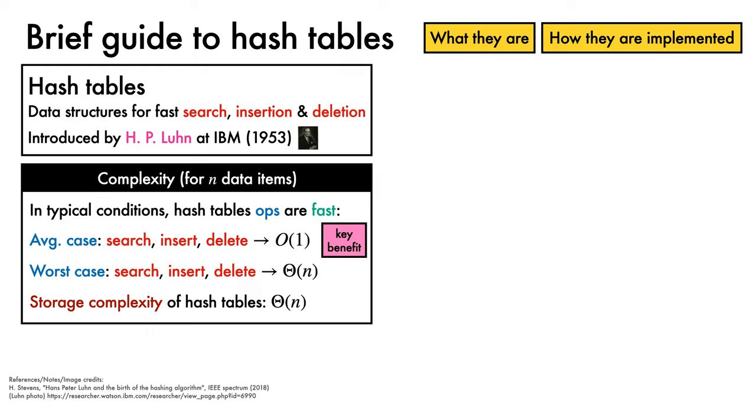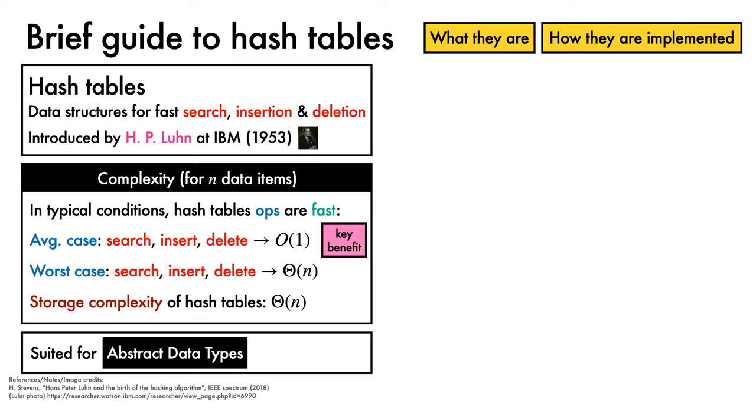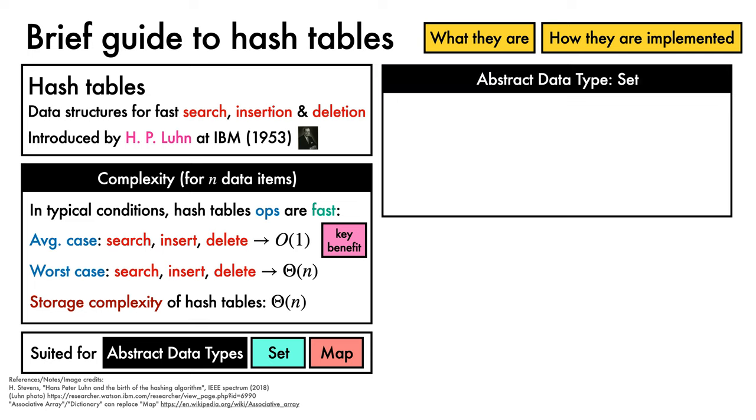The fast average case performance of hash table operations means that they are well-suited for implementing the ubiquitous abstract data types of set and map. The set abstract data type denotes a collection of objects with some associated operations. To keep things flexible, in our description of this collection, we'll assume that each object x has a key stored as an attribute x.key.